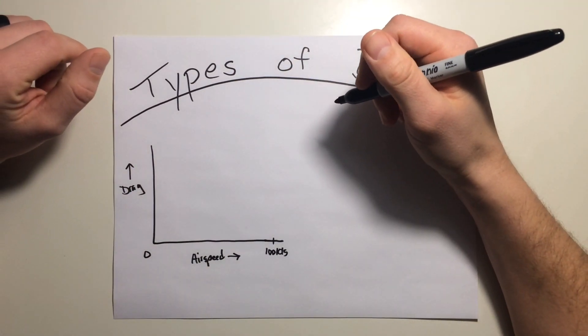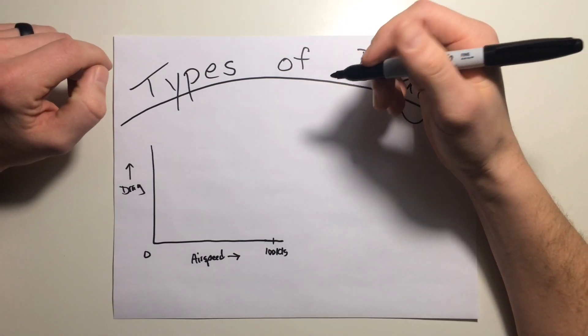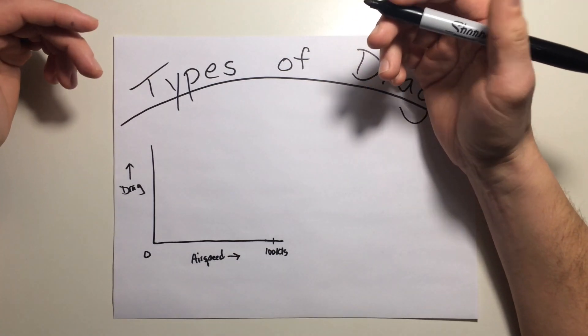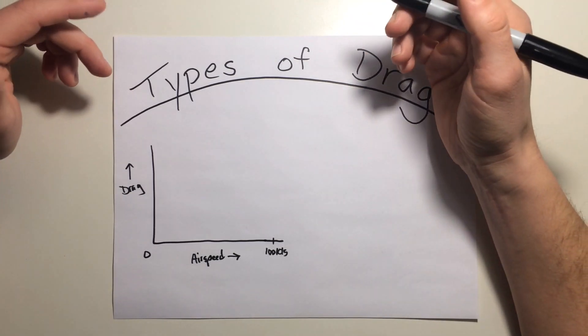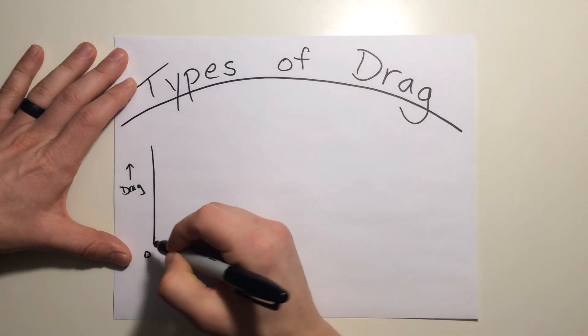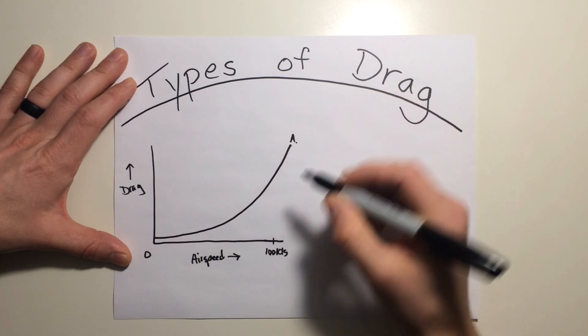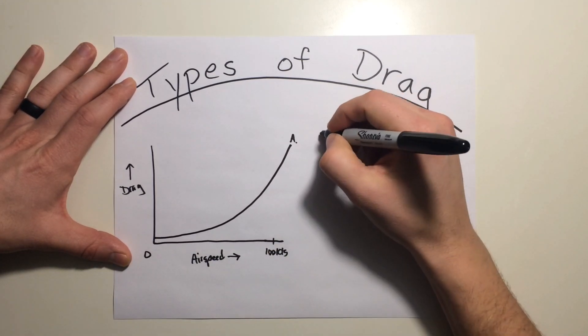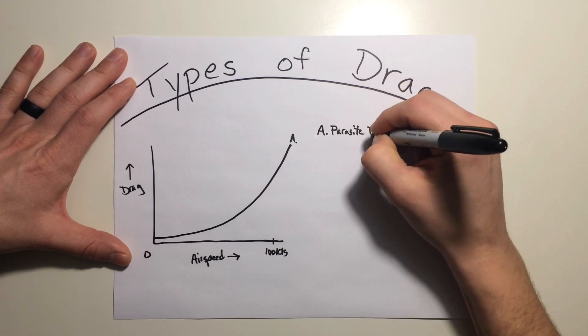Drag can be broken down into a few different types. The first being parasitic drag. Now this is probably the most obvious to understand because it applies to everything moving through the air, whether that be a helicopter, a plane, or even just a car driving. It's going to start low as you're at a lower airspeed and increase quite dramatically as you increase airspeed. This first one is called parasite drag.